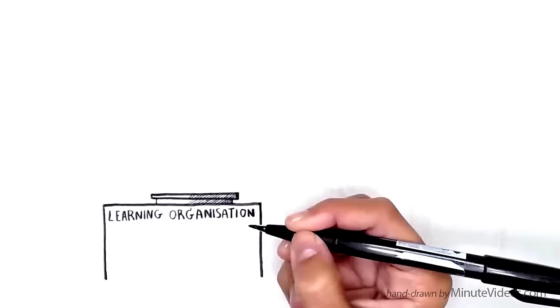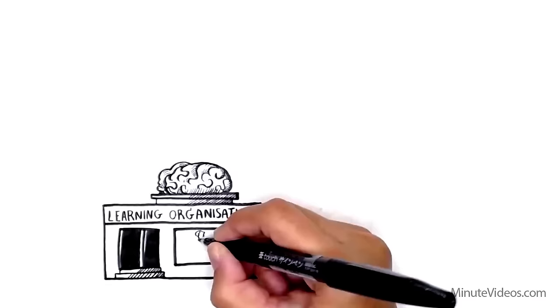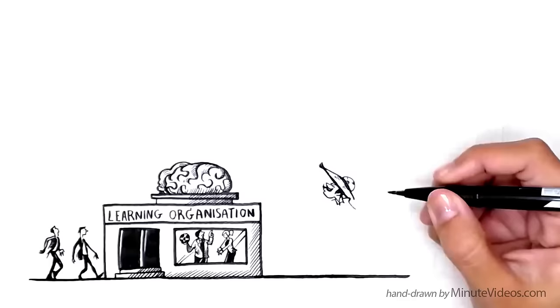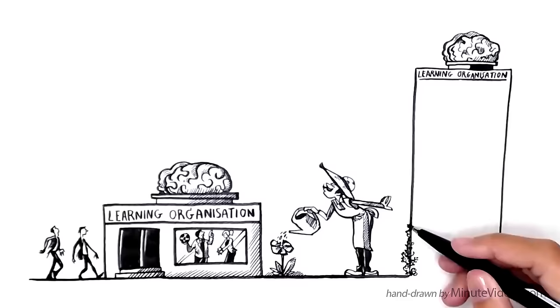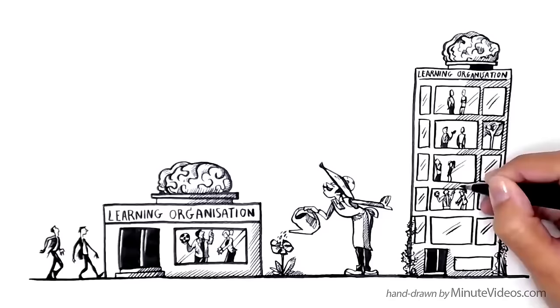A learning organization encourages personal mastery and cultivates open feedback to see problems and opportunities on all levels. Some argue that learning organizations attract and retain more talents. Others say that there is a competitive advantage for an organization whose people learn faster than the people of other organizations. Here are six characteristics most have in common.